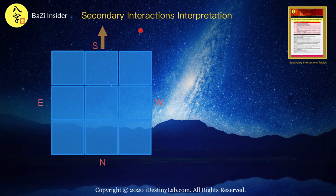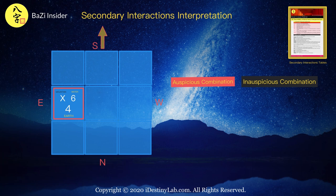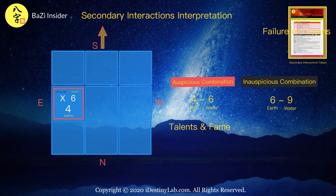Secondary interaction interpretation applies to any palaces within the combination of the Earth Star and the Water Star. Note that the first number refers to the Earth Star, whereas the second number refers to the Water Star. There are basically two types of combinations: auspicious or inauspicious. For example, a 4-6 auspicious combination would mean bringing talents or fame to a person that stays in that palace. And for a 6-9 inauspicious combination, it would mean promoting illnesses due to failure of internal organs, and the elders of the house have the highest risk. For inauspicious combinations, the effect is usually very destructive. One could refer to the secondary interaction chart for more information.